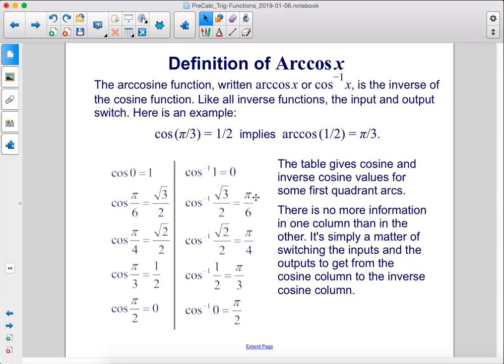The table gives cosine and inverse cosine values for some first quadrant arcs. There's no more information in one column than in the other. It's simply a matter of switching the inputs and outputs to get from the cosine column to the inverse cosine column.